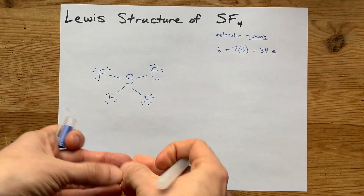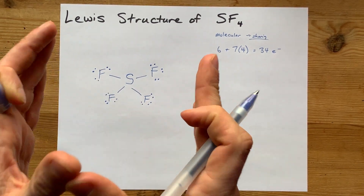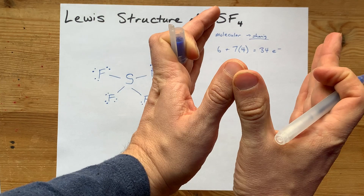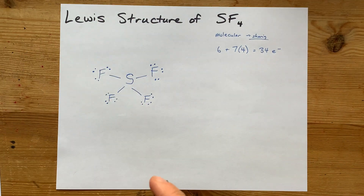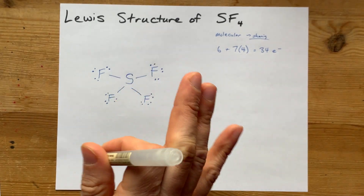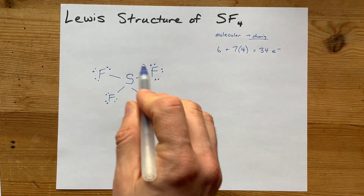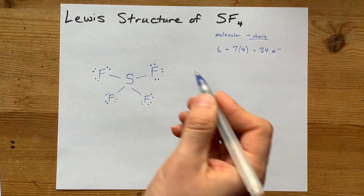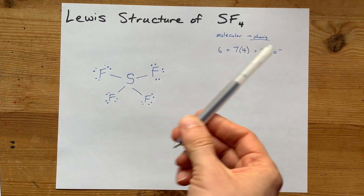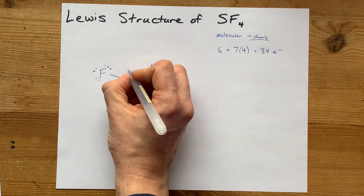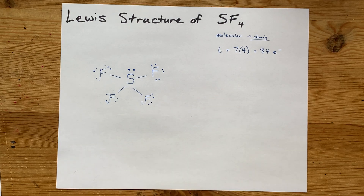Now I've completed the octets on the fluorines, but I only have 32 electrons total. I need 34, because that's how many valence electrons these atoms brought. All of the extra electrons, after filling the octets on the outer atoms, get dumped onto the central atom. I'm only missing two, to get up to 33 and 34.